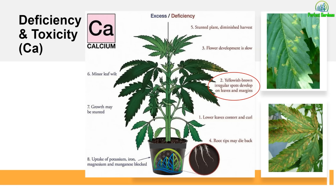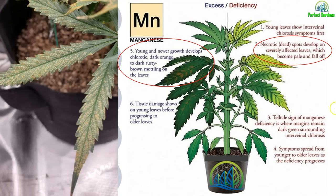Calcium presents as yellowish-brown irregular spots that develop on the leaves. As you can see right here, it's an irregular spot — kind of blotchy in different directions. Once again, you're seeing another manganese example and seeing the spots happen. If you're using a nutrient line designed to keep your plants looking green, at times these underlying deficiencies like this won't appear.